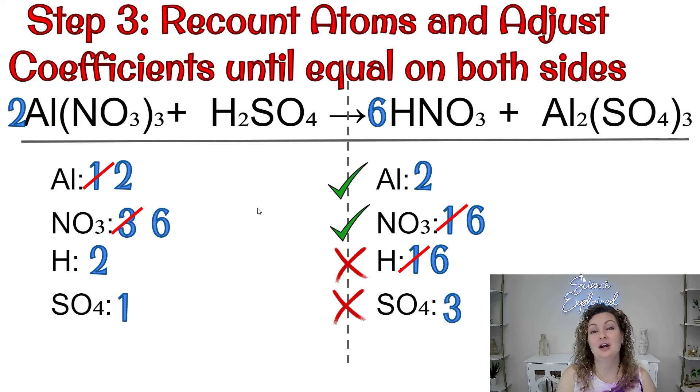So we're going to go ahead and step three, which is to recount atoms, adjust coefficients until equal on both sides. In other words, continue what you're doing. Keep recounting, keep adjusting on the reactant and the product side until it all works out. Helpful tip. Do not jump into high coefficient numbers until you've tried the low coefficient numbers. Otherwise you might have to reduce at the end and that's no fun for anybody.